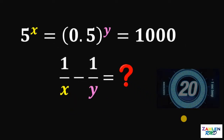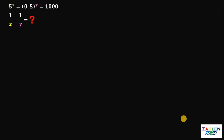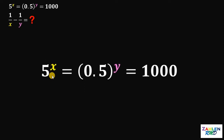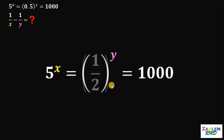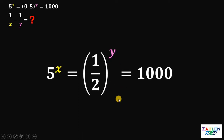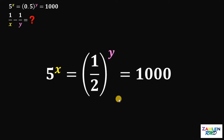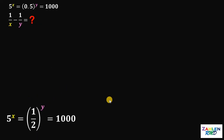Now let's answer this question together. The first thing to do is to get the given equation: 5 raised to x equals 0.5 raised to y equals 1000. Take note that 0.5 is just one half. Now let's set aside this equation and take 5 raised to x and 1000.